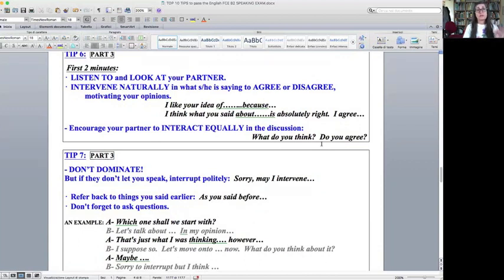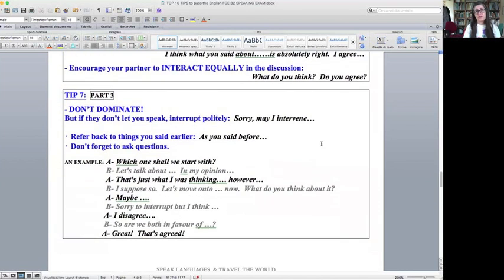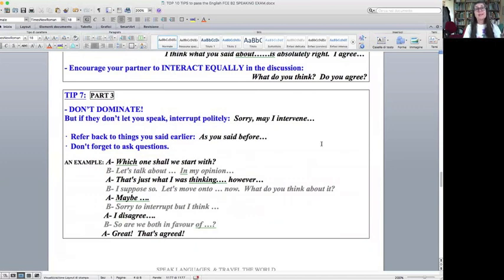Tip seven, don't dominate. So you have to encourage your partner, but if you feel they are dominating you and they don't let you speak, you must interrupt politely and say: sorry, may I intervene? And occasionally refer back to things you said earlier. For example, as you said before. Don't forget to ask questions because it's a kind of conversation. It's not a unilateral discussion. Here is an example.